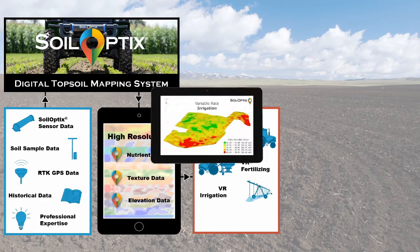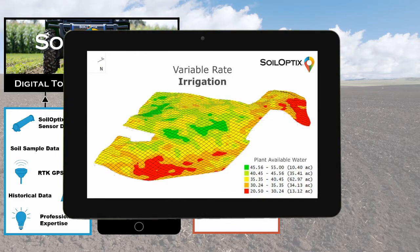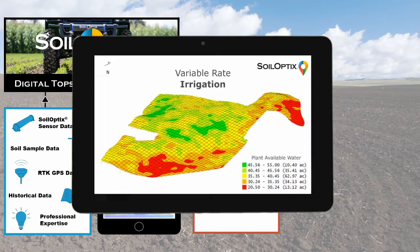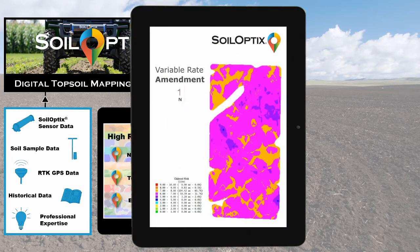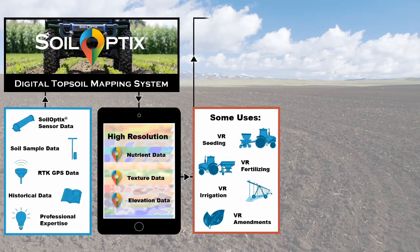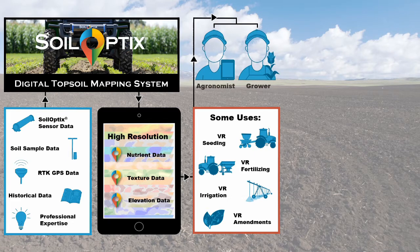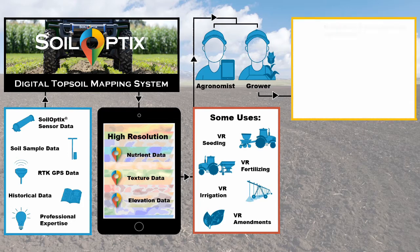Variable rate or site-specific irrigation utilizing texture layers, or identifying target areas for variable rate amendments such as the creation of a club route risk assessment map.